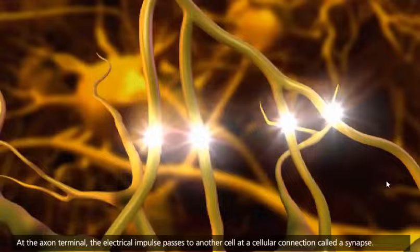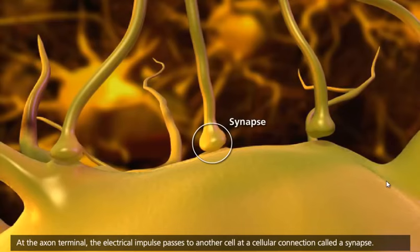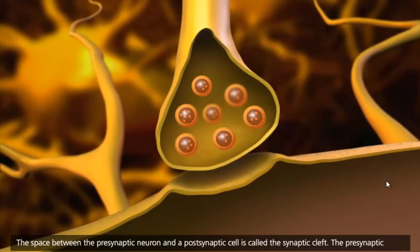At the axon terminal, the electrical impulse passes to another cell at a cellular connection called a synapse. The space between the presynaptic neuron and a postsynaptic cell is called the synaptic cleft.